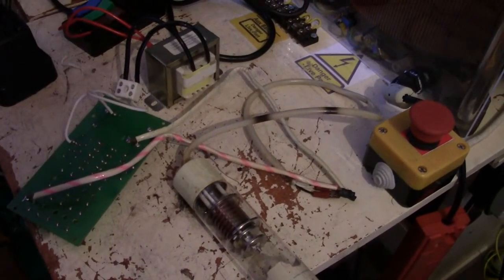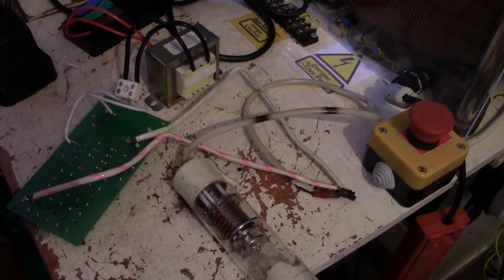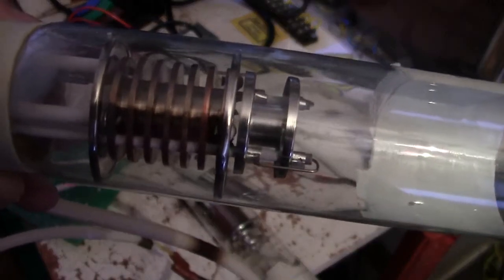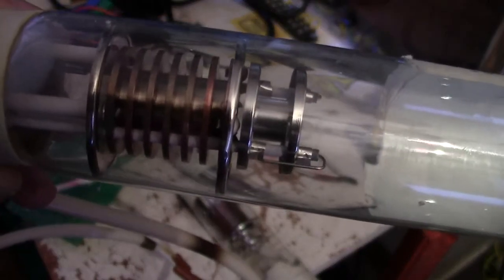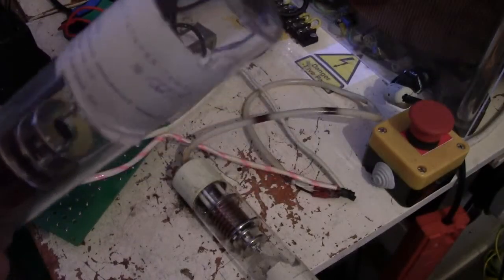Right then guys and girls, just a short video today. I've got some of these tubes. They're called a hollow cathode spectral lamp. This is a neon filled. You can get lots of different types.